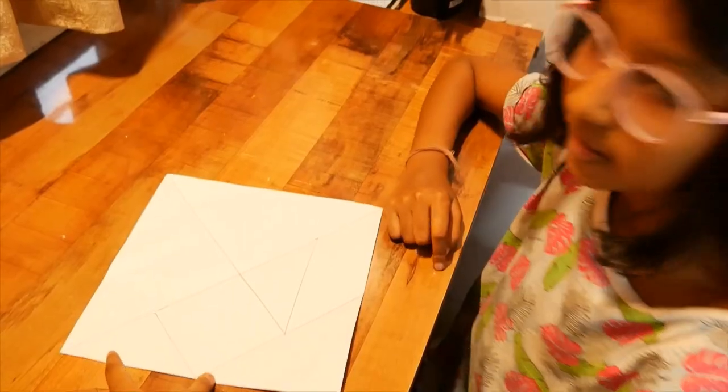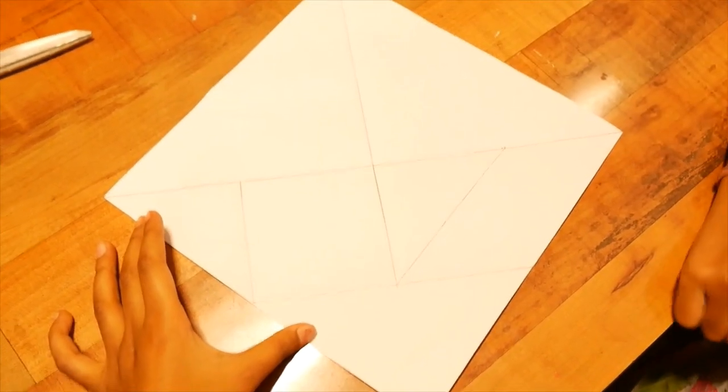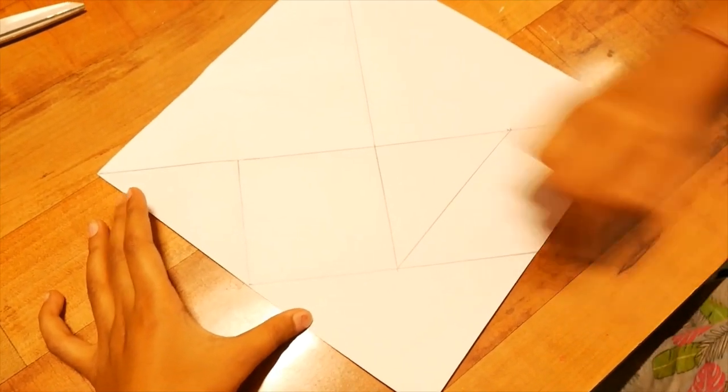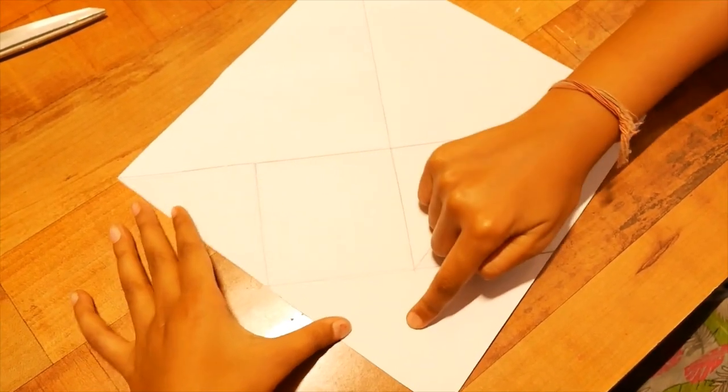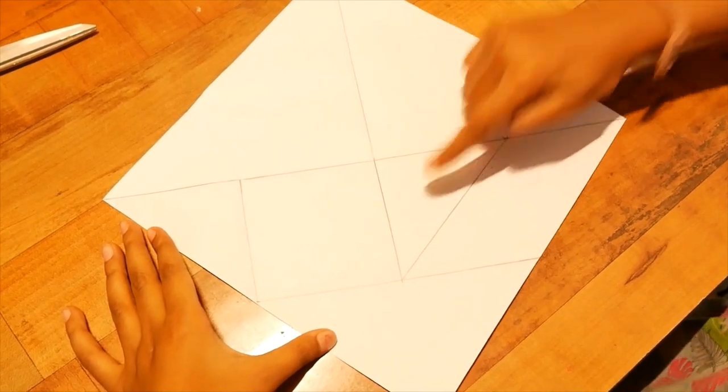So, what are the shapes we have? These are the shapes. These are the tans. Let's count the tans. One. Two. Three. Four. Five. Six. Seven.